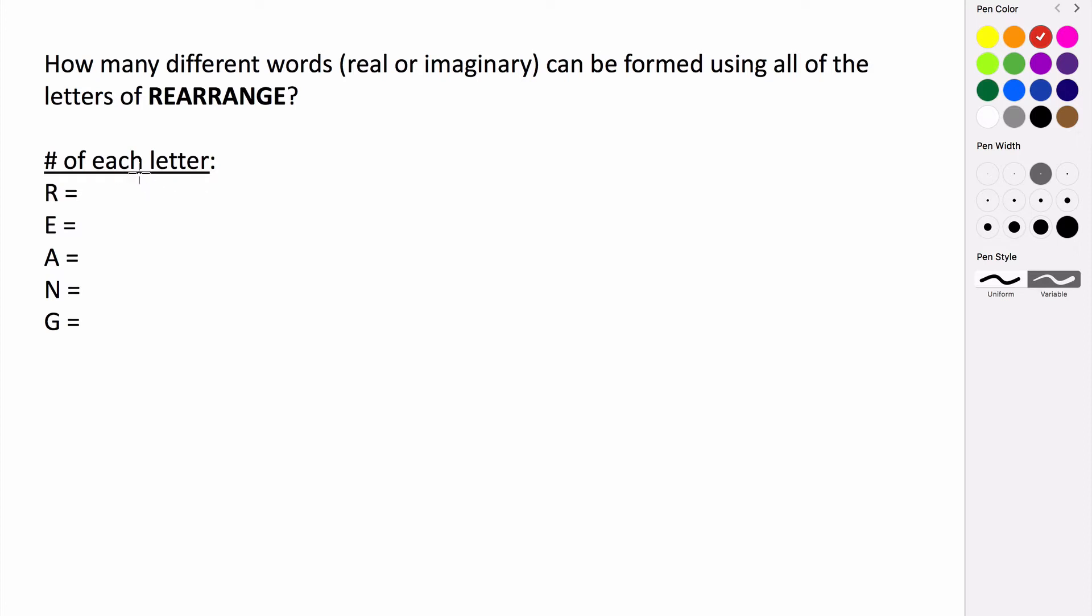So first let's figure out how many of each letter there are. So we have three R's, two E's, we have two A's, just one N and one G.